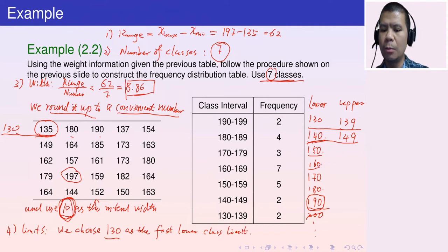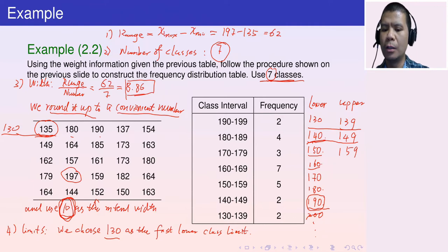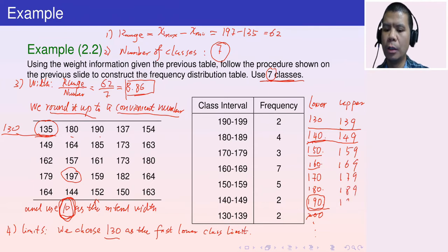Continuing, the upper class limits are 159, 169, 179, 189, and 199 — each is one less than the next lower class limit.